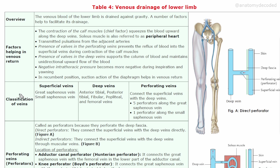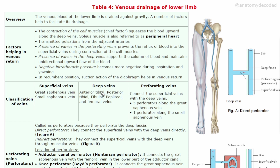Veins of the lower limb are classified into three sets: superficial veins, deep veins, and perforating veins. In this diagram, one superficial vein visible is the great saphenous vein, and one superficial vein on the posterior aspect is called the small saphenous vein. These are the two important superficial veins. The deep veins run along the deep arteries.